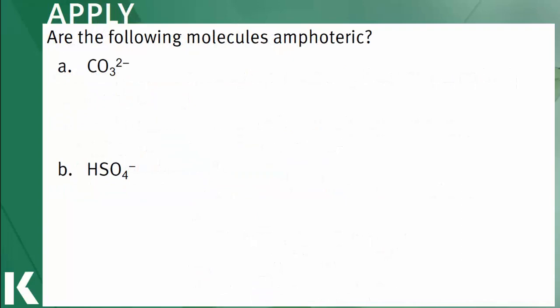We are asked to identify whether the following molecules are amphoteric. In A, carbonate is capable of gaining a proton to form bicarbonate. Gaining a proton means that carbonate is acting as a base.